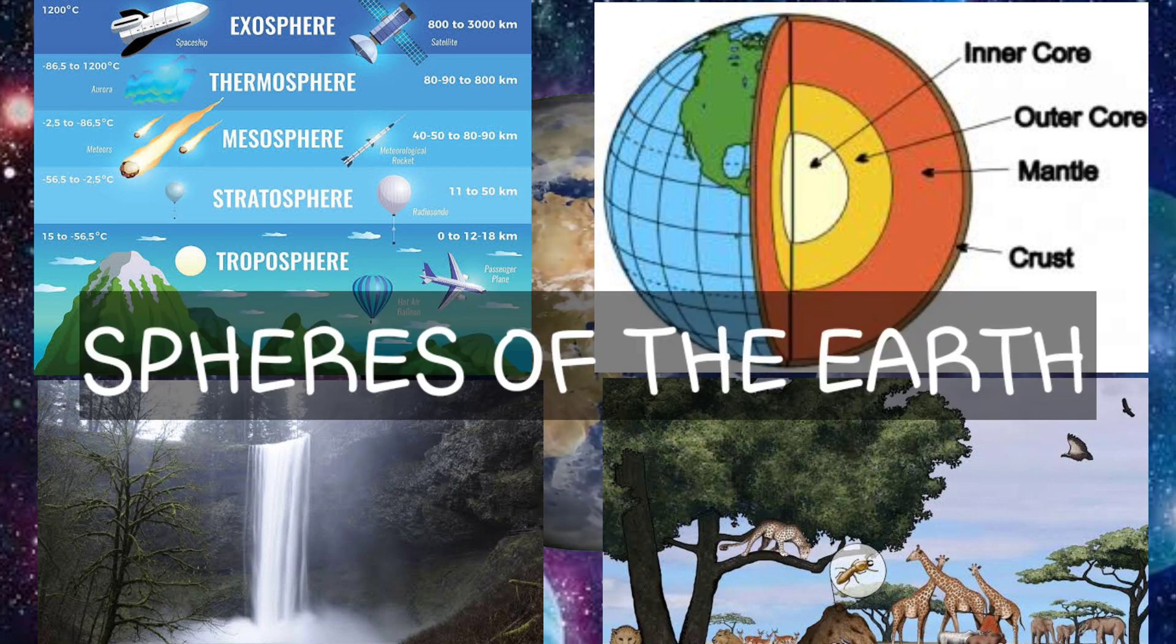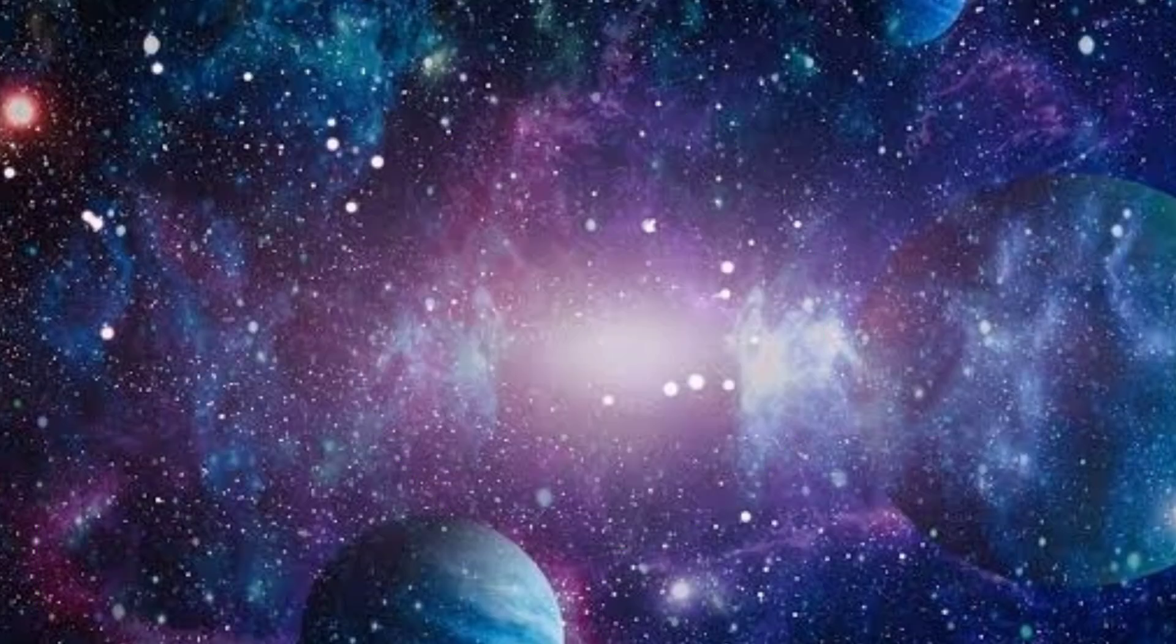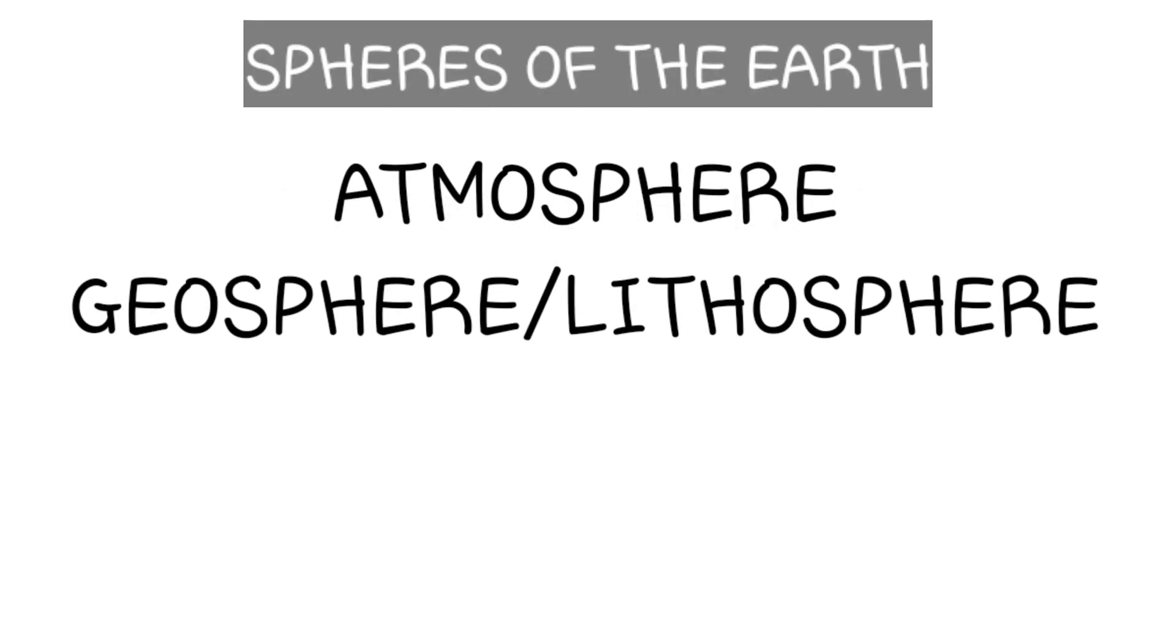These four subsystems of the Earth are also called the spheres of the Earth. These are the atmosphere, geosphere (also called lithosphere), hydrosphere, and biosphere.